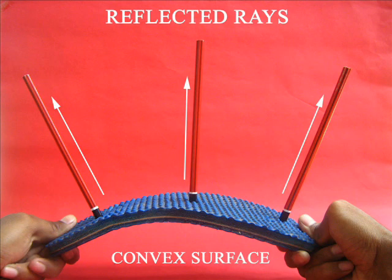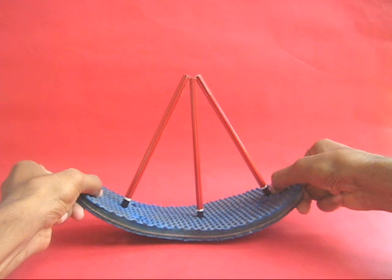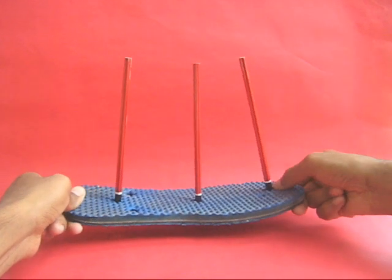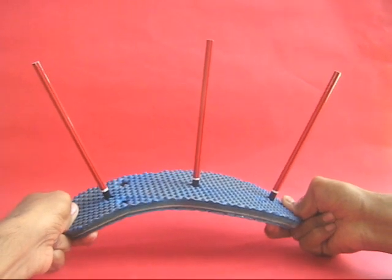If it is a convex surface they are all reflected. They diverge. Now with a simple rubber slipper you can show practically how rays behave when the surface of the mirror is curved convex or concave.